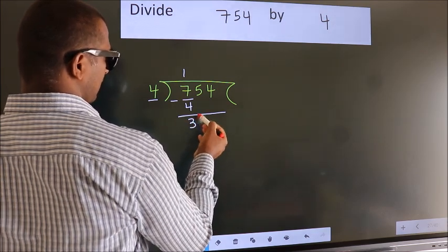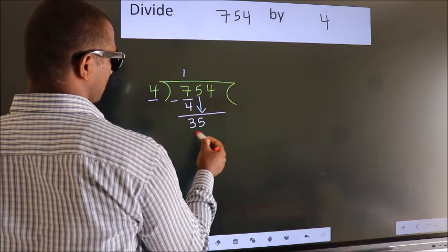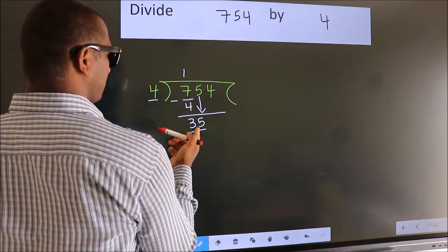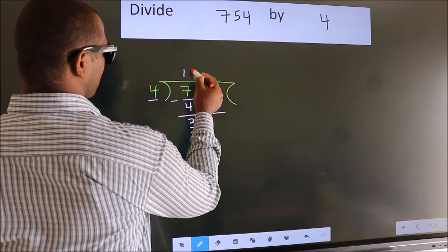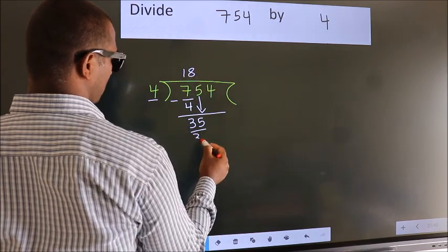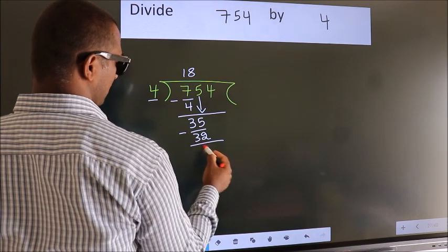After this, bring down the beside number. So, 5 down. So, 35. A number close to 35 in the 4 table is 4 eights 32. Now, we subtract. We get 3.